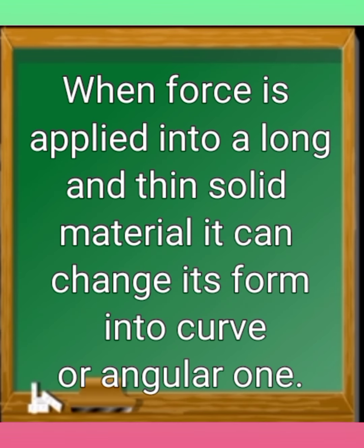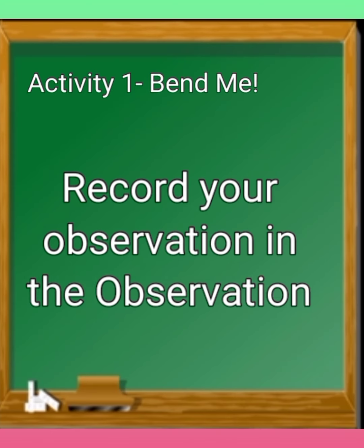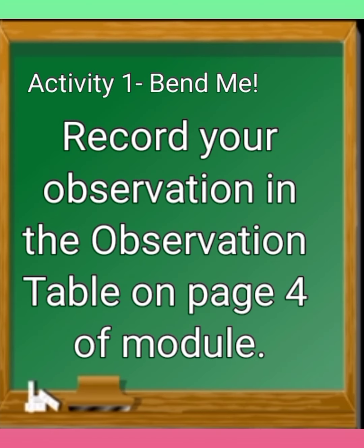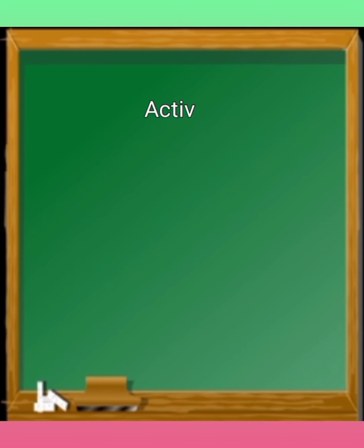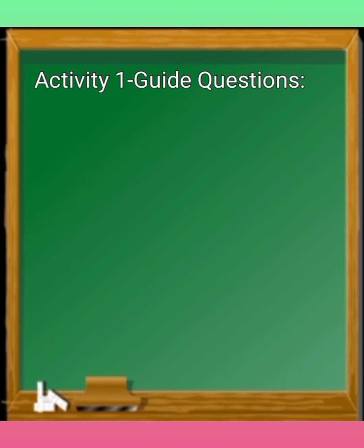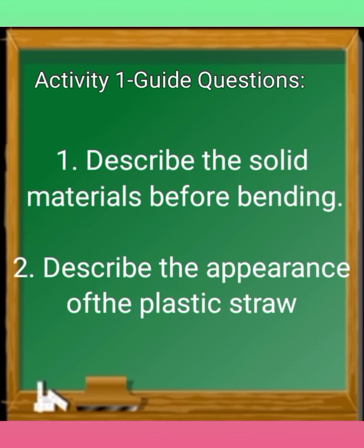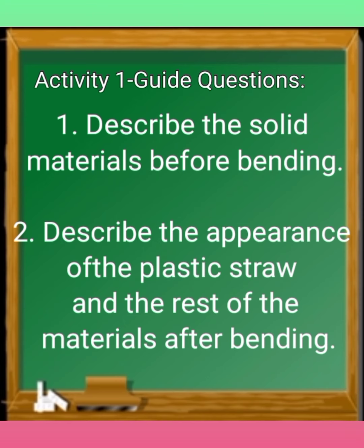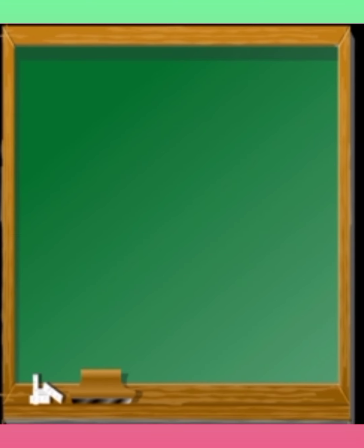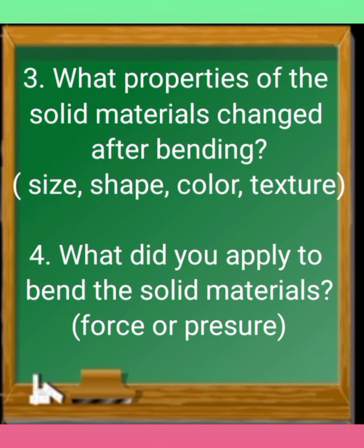When force is applied to long and thin solid materials, it can change their form into a curved or angular one. Please record your observations in the observation table on page four of your module. Answer the guide questions: 1. Describe the solid materials before bending. 2. Describe the appearance of the materials after bending. 3. What properties changed — size, shape, color, or texture? 4. What did you apply to bend the materials — force or pressure?